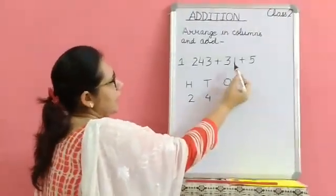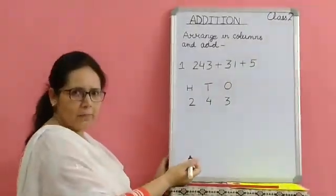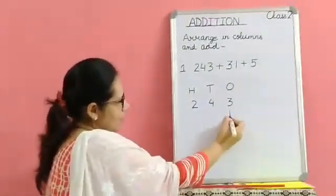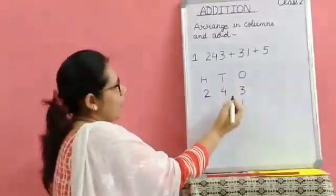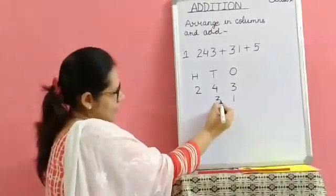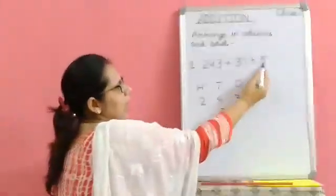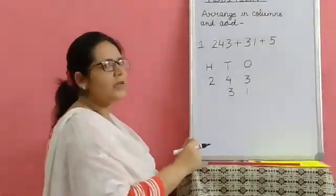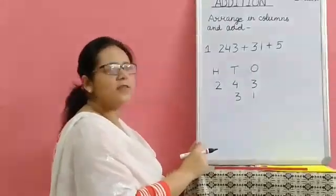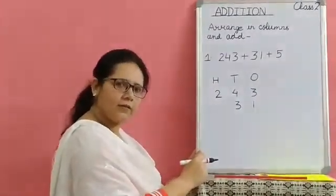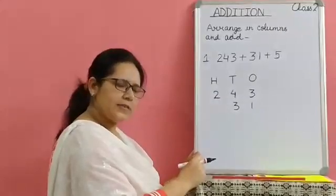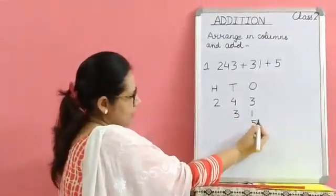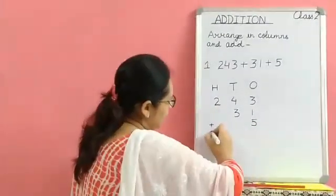The second number is a two-digit number, so we have only ones and tens. How many ones? One one. And how many tens? Three tens. The last number is a single-digit number. Children, when we have a single-digit number, there is no tens digit and there is no hundreds digit either — we have only the ones digit. So we will write five under the ones column. And now we will add them.